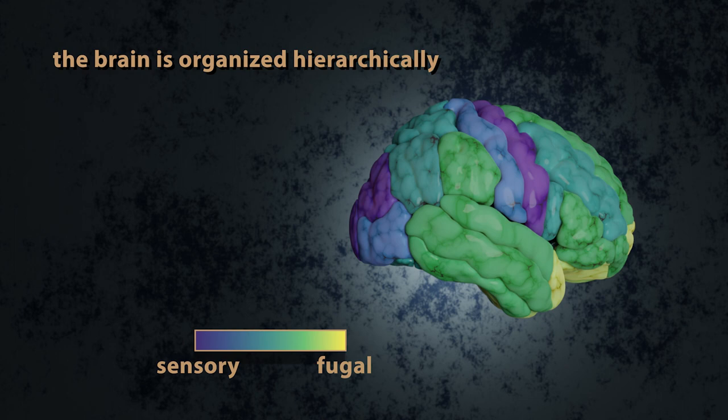This axis is thought to shape the structural connectivity between brain regions. We also think that this axis shapes and constrains the propagation and integration of neuronal signals across the cortex.